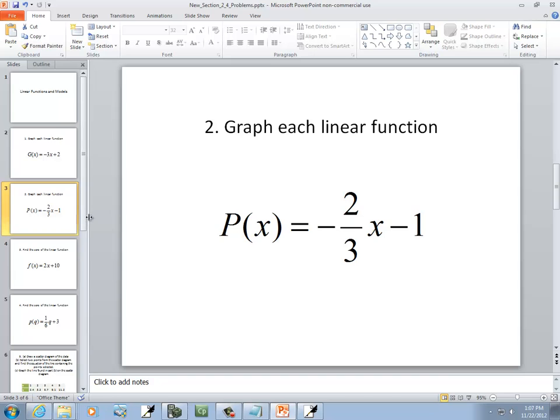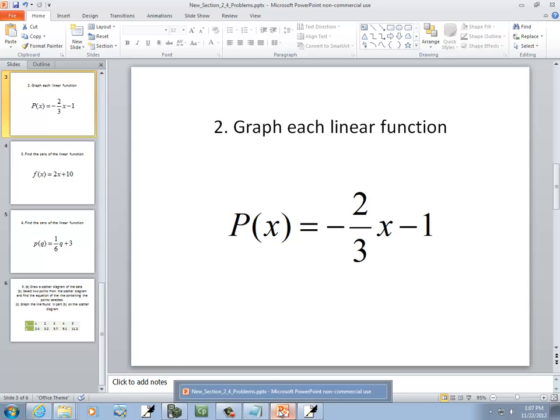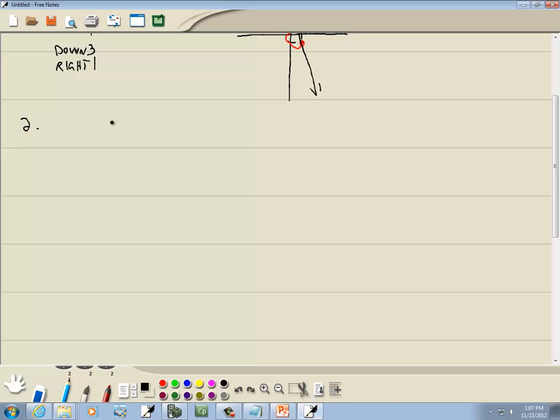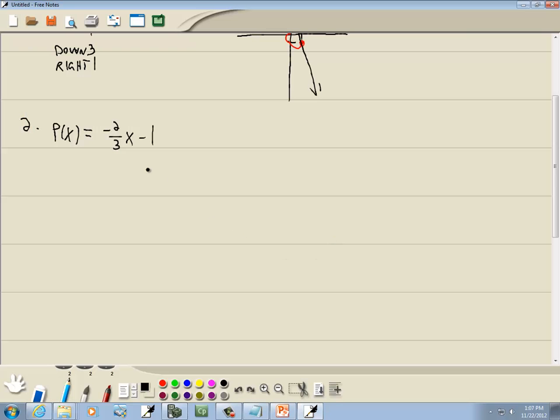Let's take a look at our second problem here. p(x) is equal to negative 2 thirds x minus 1. Now notice in my original problem the negative was out in front. We don't want negative out in front. We want it either on top or the bottom. It helps with graphing. This is our y-intercept. So our y-intercept is negative 1.